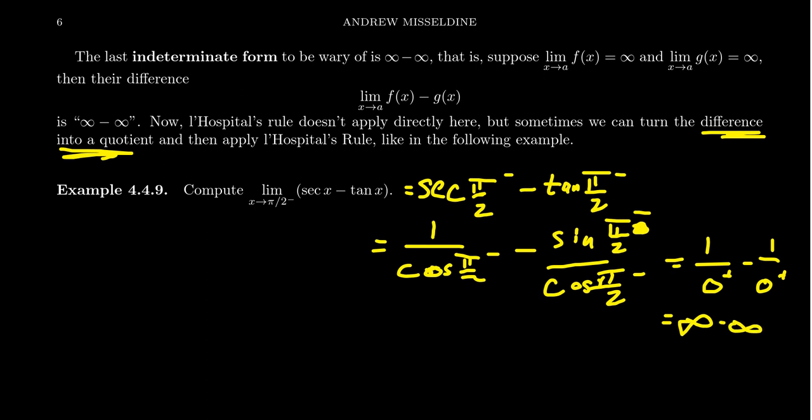But it turns out my process of trying to compute what those things are actually shows exactly what we need to do. We can turn this into a fraction by using trigonometric identities. For example, secant is the same thing as 1 over cosine. And tangent is the same thing as sine over cosine. Which this is a common denominator. And so we can add them together, or in this case subtract.